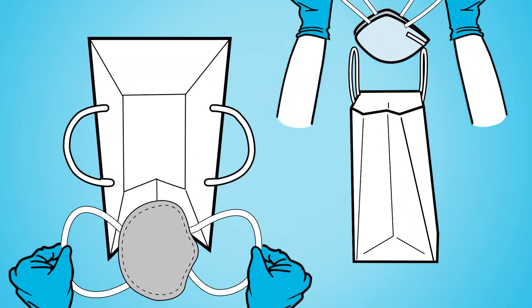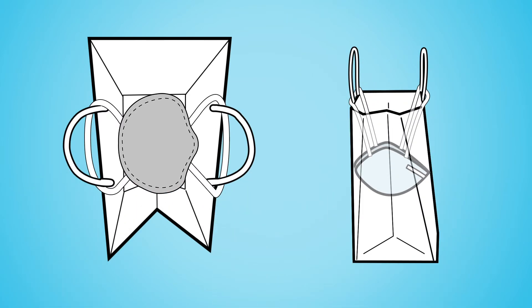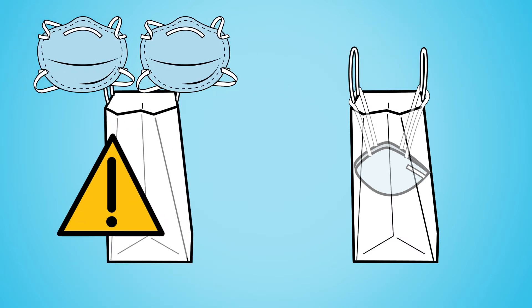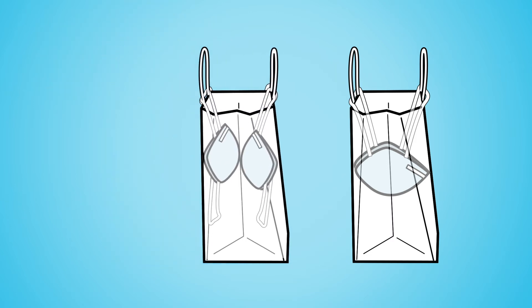You can loop the straps of the respirator over the bag handles so that it is held inside the bag. If you are alternating respirators and short on bags, you can loop the straps of a respirator over each handle so the outer surfaces face each other inside the bag.